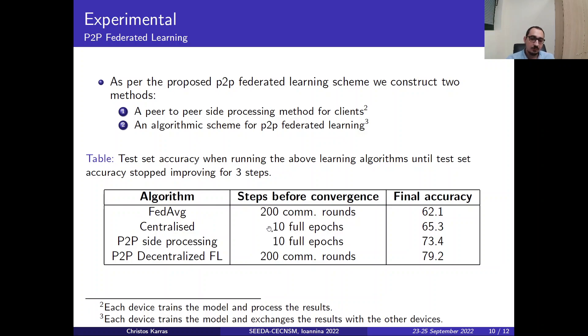We have the centralized approach, which ran for 10 full epochs, and it peaked at 65% accuracy. We have the peer-to-peer side processing method running for 10 full epochs, which peaked at 73% accuracy.